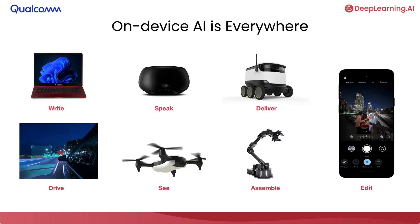On-device AI is everywhere. When you type on a keyboard on a laptop, it's powered by a language model that runs on-device. When you talk to a smart speaker, the text-to-speech is entirely powered on-device. Robots that deliver and assemble have a lot of on-device AI. Drones that can scan landscapes for industrial and agricultural use cases use on-device AI. Every time you edit a picture on a smartphone or a laptop, that's powered by on-device AI.